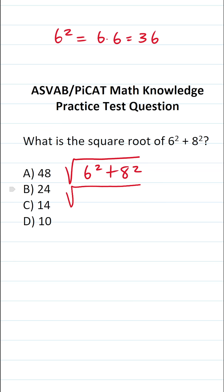So this becomes the square root of 36 plus, what is 8 squared? 8 squared is the same thing as 8 times 8, which is 64.